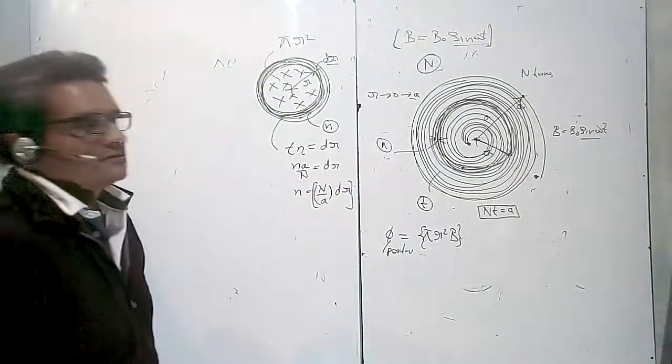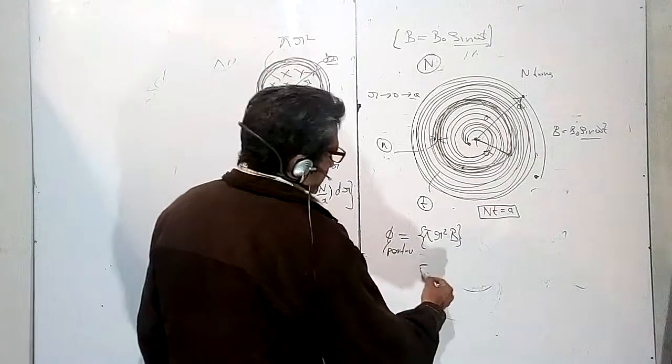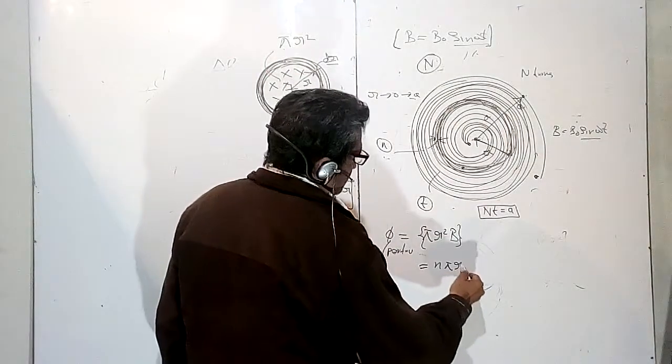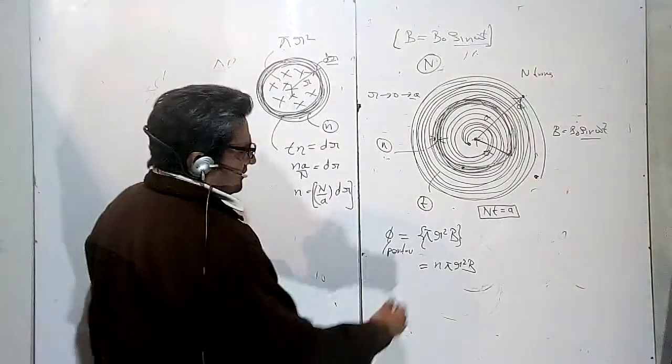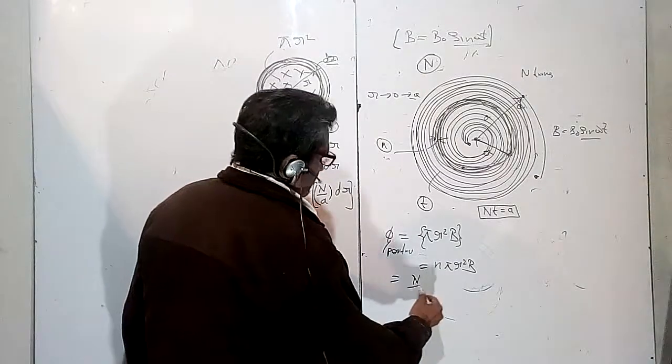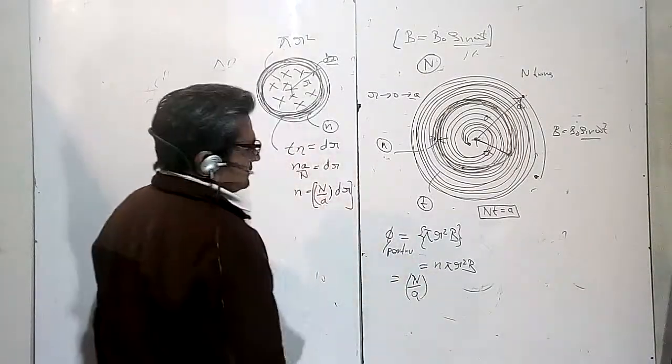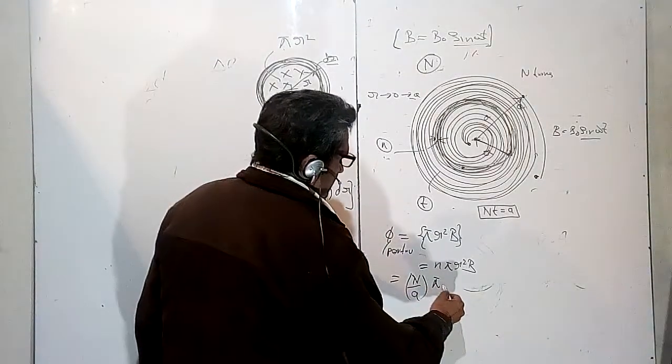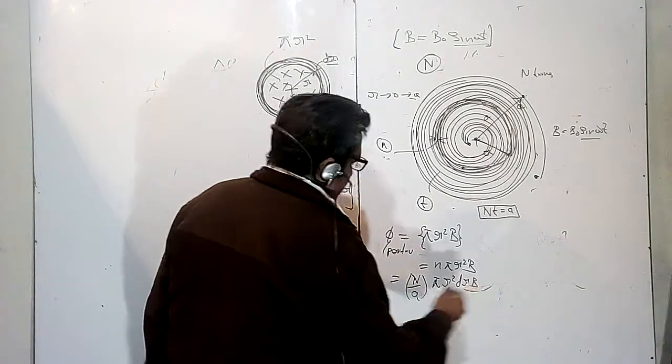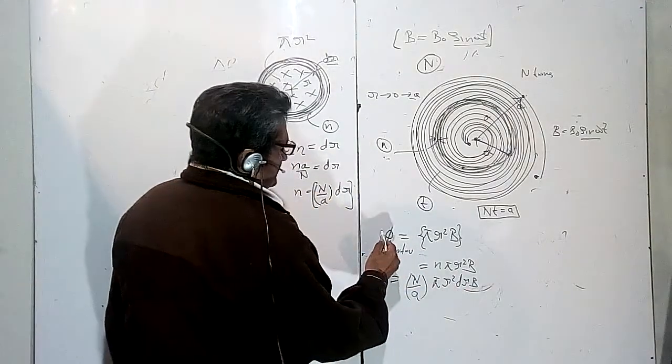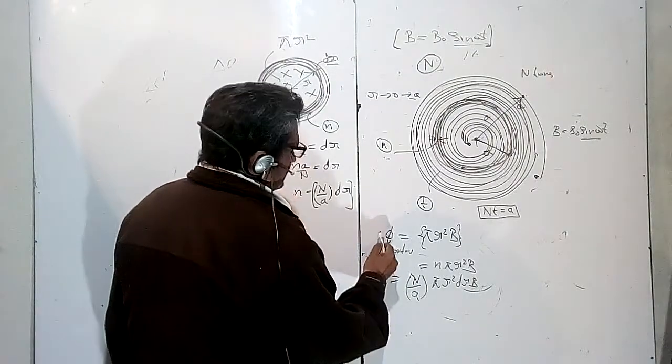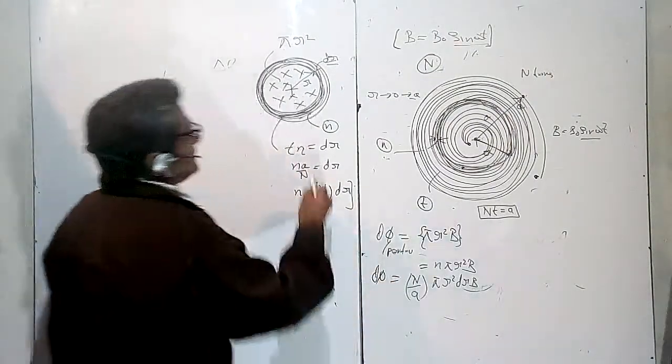Because there are N turns, dΦ is equal to N times πR² into B. The N value is N upon A into dR, so πR² dR into B. This is my dΦ, the flux through a patch.